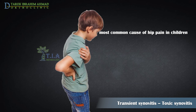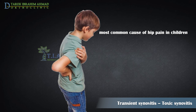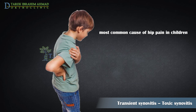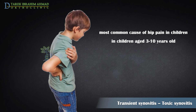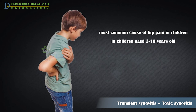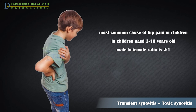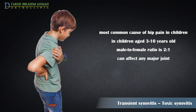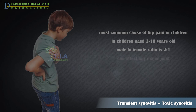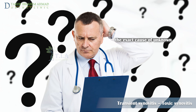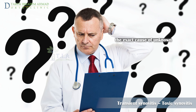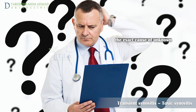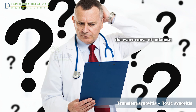Transient synovitis of the hip is the most common cause of sudden hip pain in children. This condition is called transient because it lasts only a short time. It usually occurs in children between 3 and 10 years of age, and is more common in boys than in girls. In most cases only one hip is affected, but some children have pain in both hips. The exact cause is unknown — it might be caused by a viral infection such as an upper respiratory infection, or a reaction to an infection somewhere else in the body.